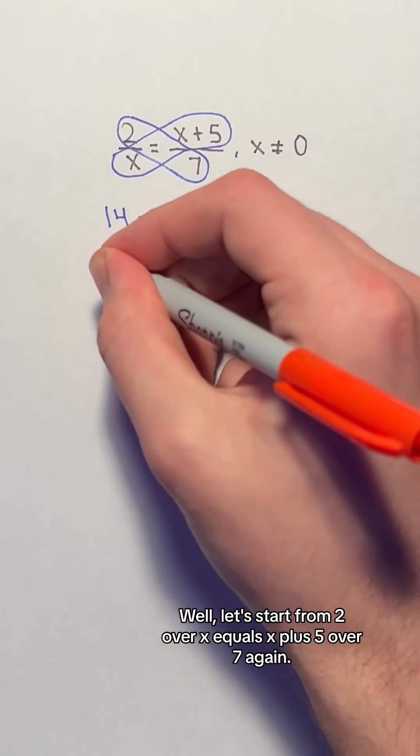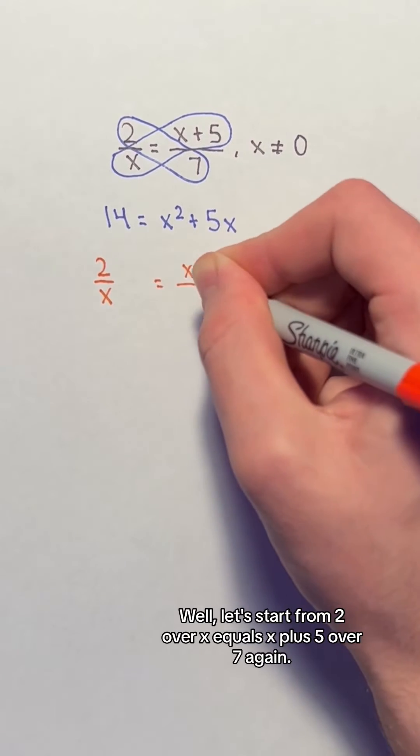But why can we do this? Well, let's start from 2 over x equals x plus 5 over 7 again.